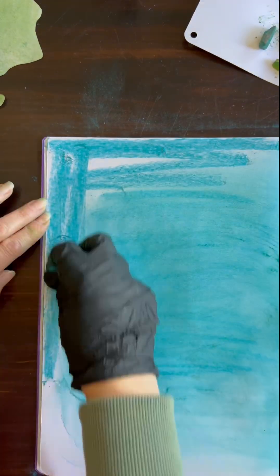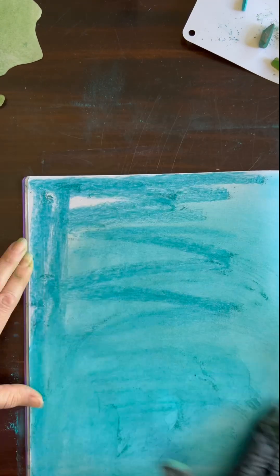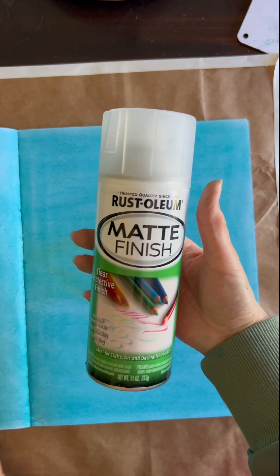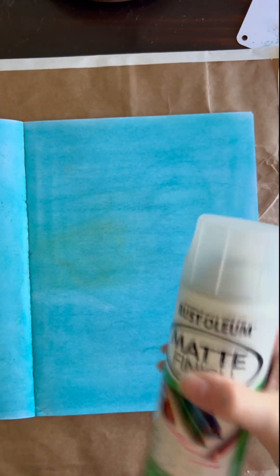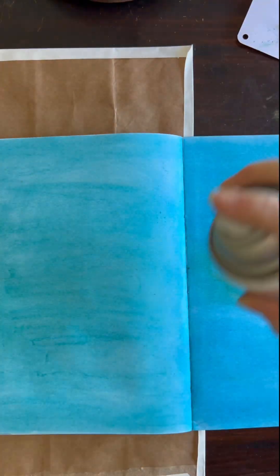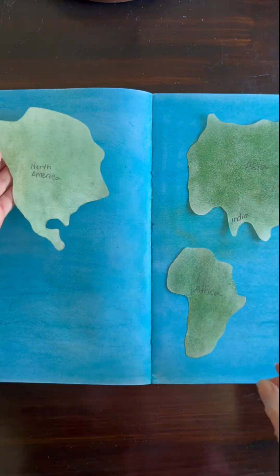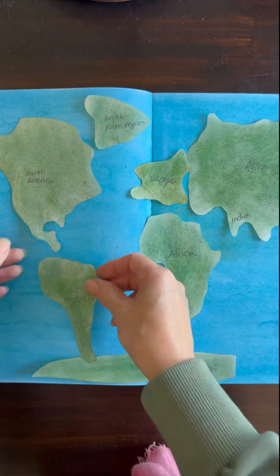I'm using my matte fixative in order to spray it. This is going to set it so that it doesn't smear anymore. You do need to give it enough time to dry thoroughly before you start assembling your project. It's preferable to do this outside since it does have a strong odor and if it's a sunny day, this will dry very quickly.